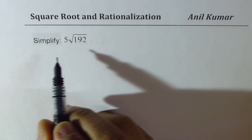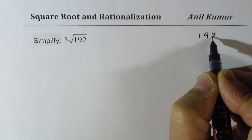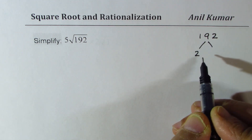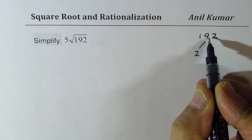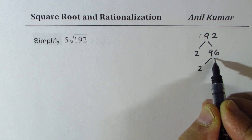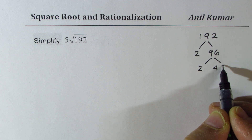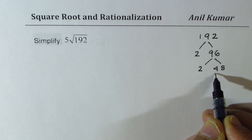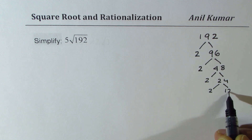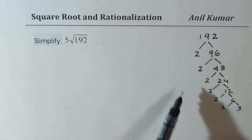Let's begin with the very first example — we need to simplify 5 times the square root of 192. To get factors of 192, we form a factor tree. Since it's even, divide by 2: that gives 96. Divide again by 2 to get 48, then continue: 2 times 24, 2 times 12, 2 times 6, 2 times 3. So we do prime factorization.